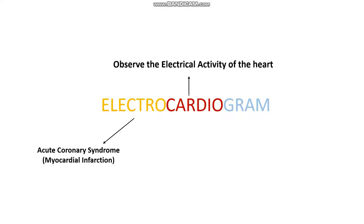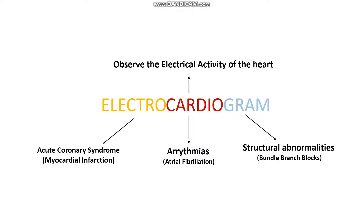It may be used to detect issues with the rhythm of the heart, or disorders which affect heart rhythm, in things that we call arrhythmias — a very common example being atrial fibrillation. Another use is to detect conductive structural abnormalities in the heart, in things like bundle branch blocks.